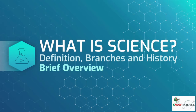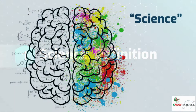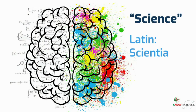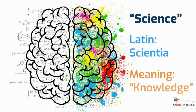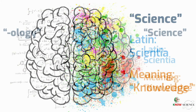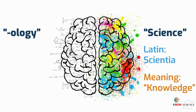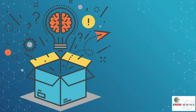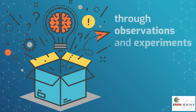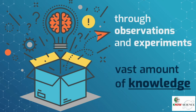Science comes from the Latin word 'scientia,' which means knowledge. The names of many branches of science end with '-ology,' which means 'study of' in Greek. Science is the study of the physical and natural world through observations and experiments, and has provided a vast amount of knowledge about a broad range of phenomena.